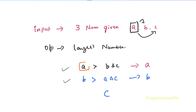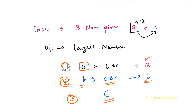First we check whether a is greater than b and c. If both conditions are true, then a is the largest number. If any one condition is false, we check whether b is greater than a and c. If that is true, b is the largest number. But if b is greater than a yet less than c, then b is not the largest number — we write c as the largest. So first check a, then check b, and if both conditions are false, c is the largest number.